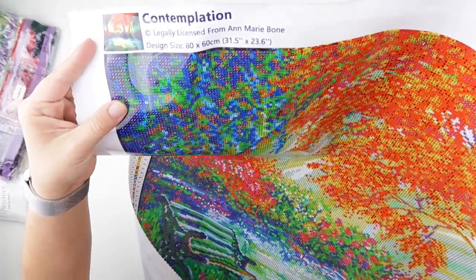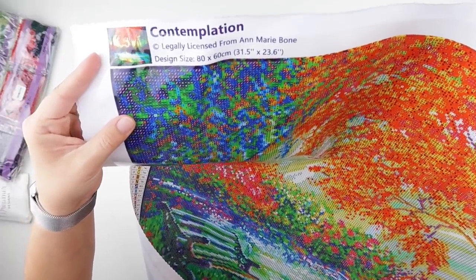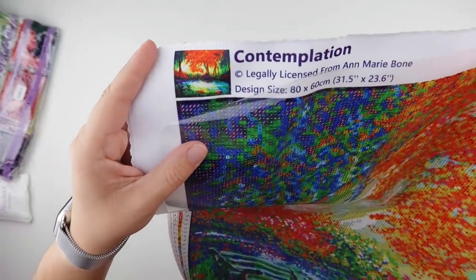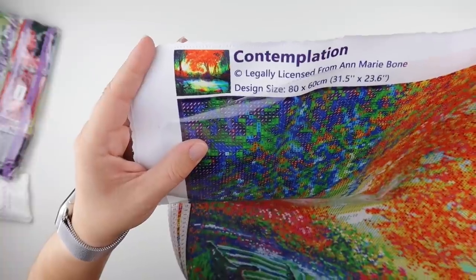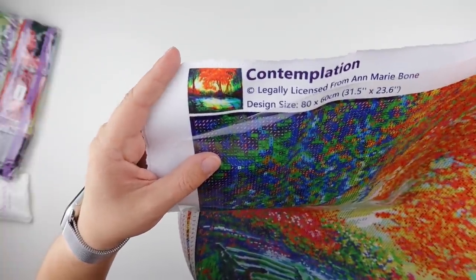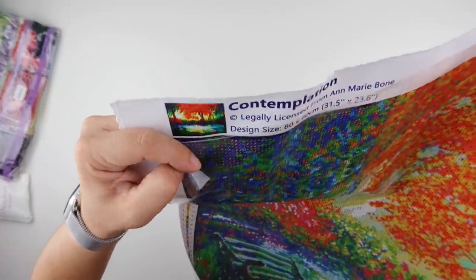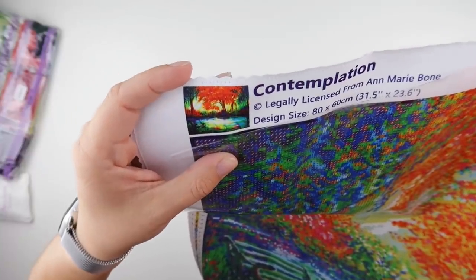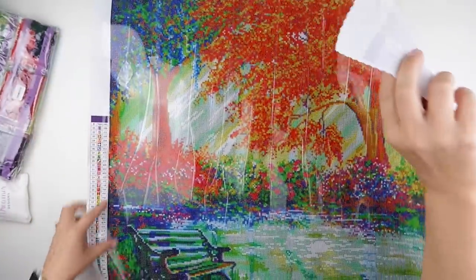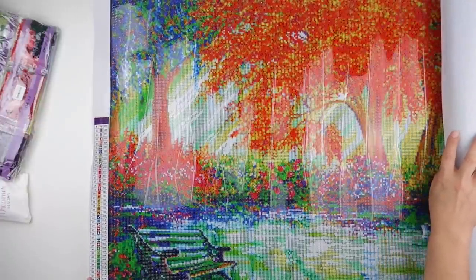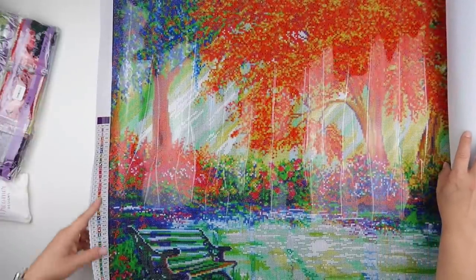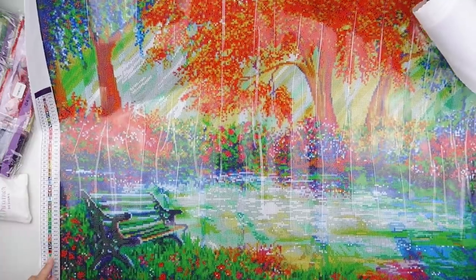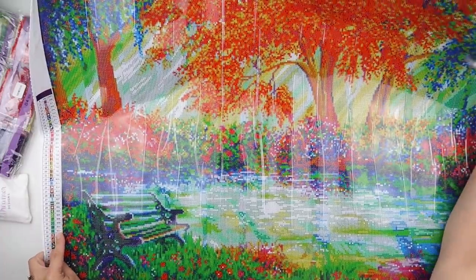So this is it, so it's legally licensed from Anne Marie Bone and this is the image that I chose that was in stock. The original image that I had done an unboxing on that I shouldn't have done and therefore will not be on YouTube anymore was not in stock, but this one was and I still thought it was pretty. We have 52 colors, three of which are AB, and that's the image.